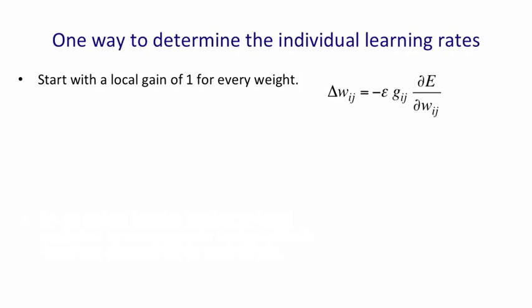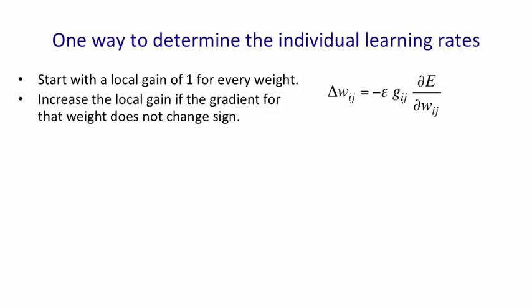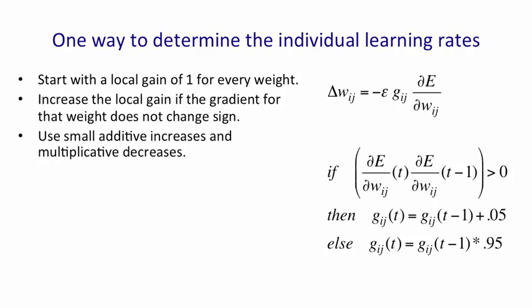Then what we're going to do is adapt g_ij. We're going to increase g_ij if the gradient for the weight does not change sign, using small additive increases and multiplicative decreases. If the gradient for the weight at time t has the same sign as the gradient for the weight at time t-1, where t refers to weight updates, then when you take their product, it'll be positive, because you'll either get two negative gradients or two positive gradients. And then we're going to increase g_ij by a small additive amount.